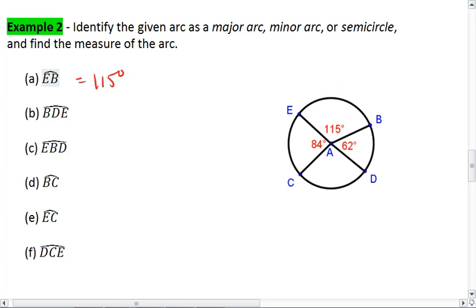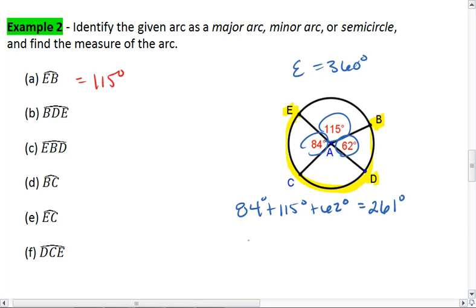Now we can look at arc BDE, that goes from B to E passing through D. To see that, we have 84, 115, 62. I know that my circle should sum to 360, so I do 84 plus 115 plus 62, which gives me 261. The difference between that and 360 is 99 degrees. That means this angle here, angle CAD, is 99 degrees.